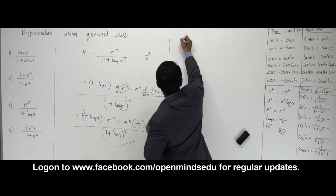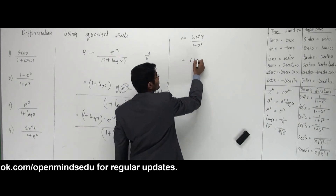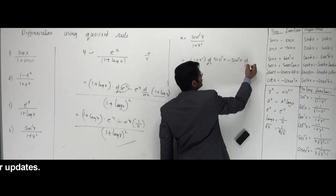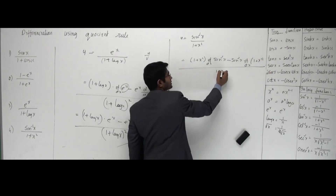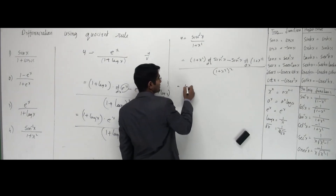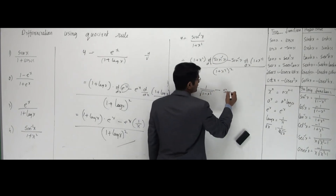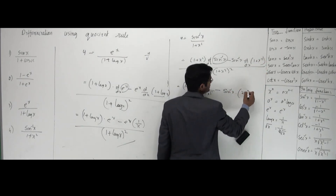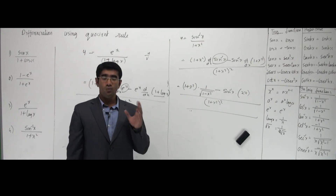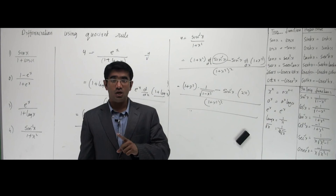The last problem says y equals sine inverse of x divided by 1 plus x squared. The formula is: denominator, 1 plus x squared, into d/dx of sine inverse x, minus sine inverse of x into d/dx of 1 plus x squared, all divided by 1 plus x squared, the whole squared. The differentiation of sine inverse x is 1 over root of 1 minus x squared. And the differentiation of 1 plus x squared: 1 is 0, x squared is 2x. So the final answer is that expression divided by 1 plus x squared, the whole squared. Work a couple more problems yourself from your textbooks. Do them yourself alone — that will teach you a lot. Learn the techniques, not just the number of problems involved.